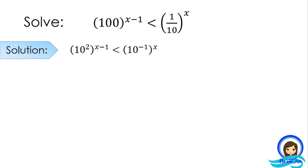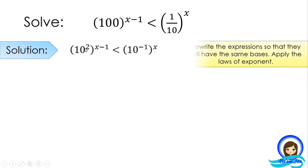The first thing to do is to make sure that their bases are equal. 100 can be written as 10 squared, and 1/10 can be written as 10 to the power of negative 1. We rewrite the expressions so they have the same bases and then apply the laws of exponents. 10 to the power of negative 1 is equivalent to 1/10 according to the law of negative exponents.